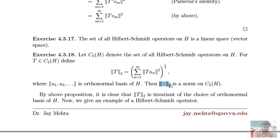We need to verify the properties of this norm on C₂(H). The norm is always non-negative since each term norm of T(uₙ) is non-negative. If the norm is zero, T must be zero on the entire orthonormal basis, hence T is the zero operator. We also need to verify the triangle inequality and the scalar multiplication property.